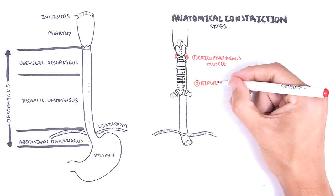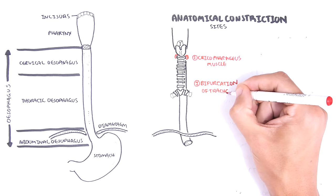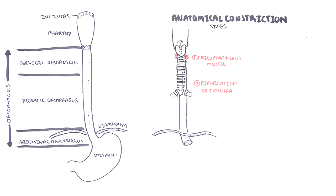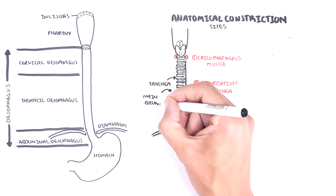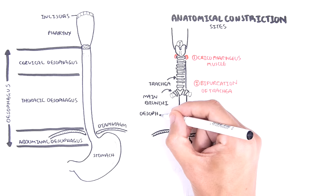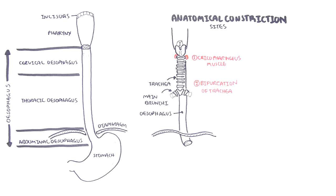The second narrow point is the bifurcation of the trachea to the main bronchi and also where the aortic arch is. Here is the trachea and its bifurcation into the main bronchi and behind it, continuing on, is the esophagus.